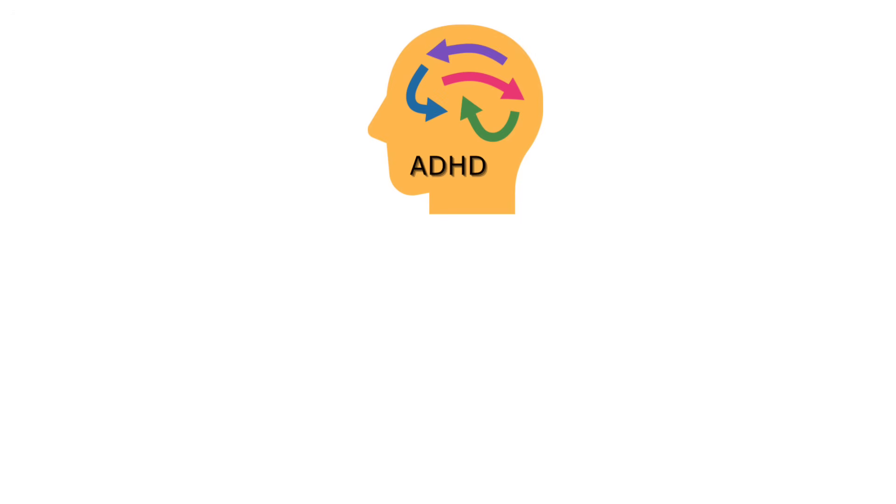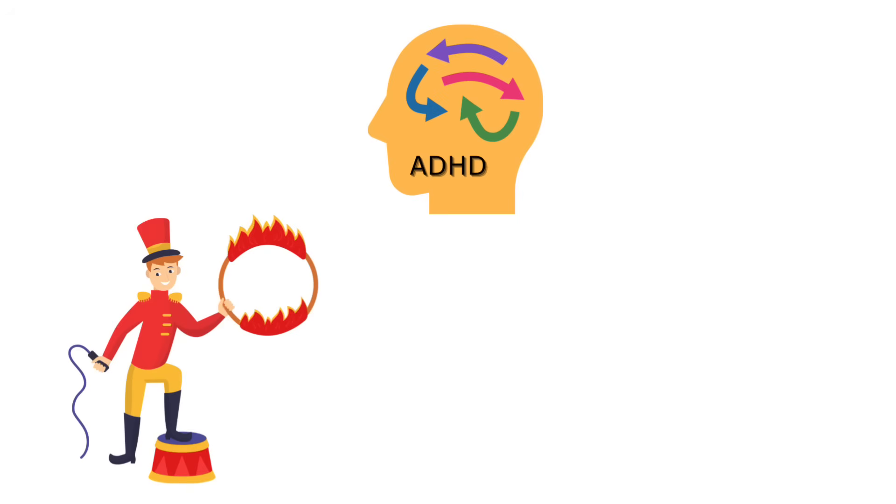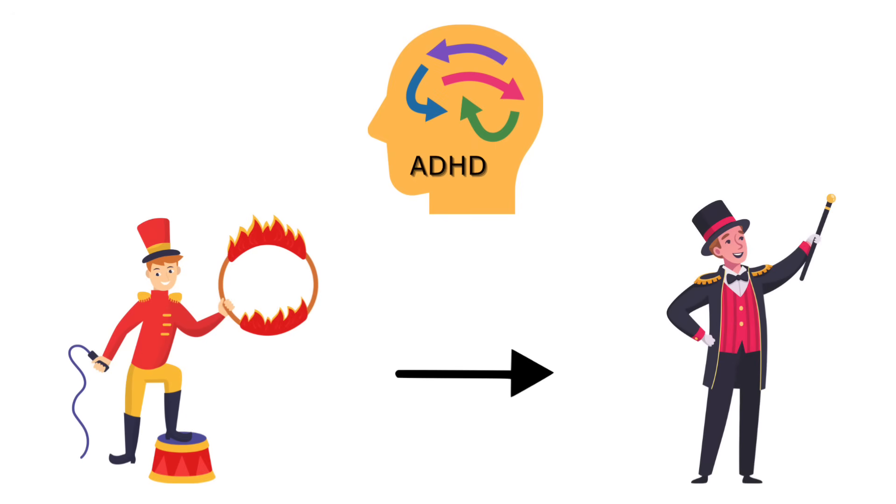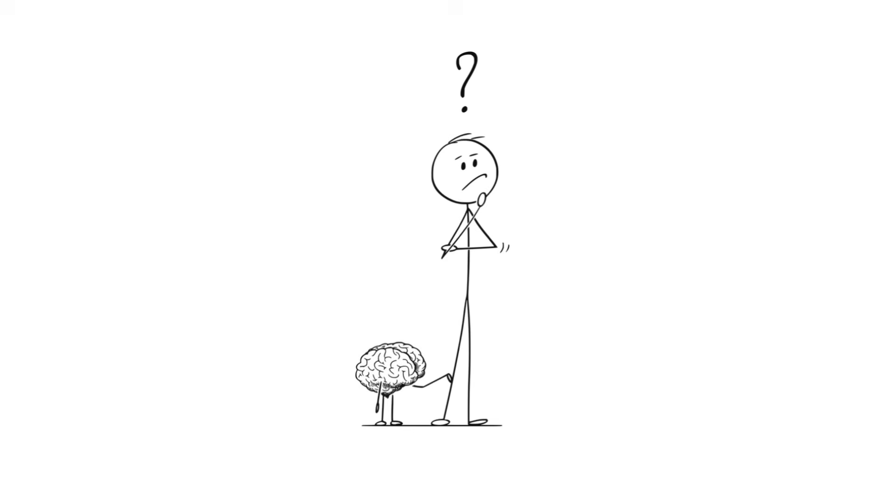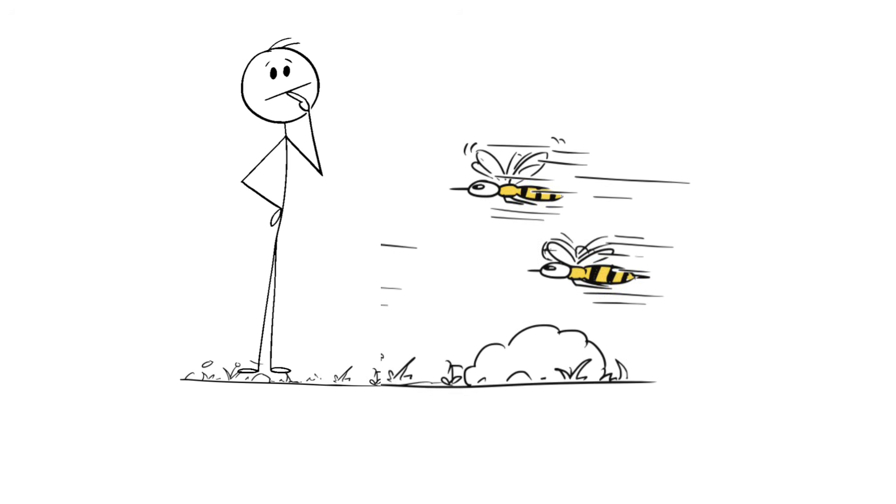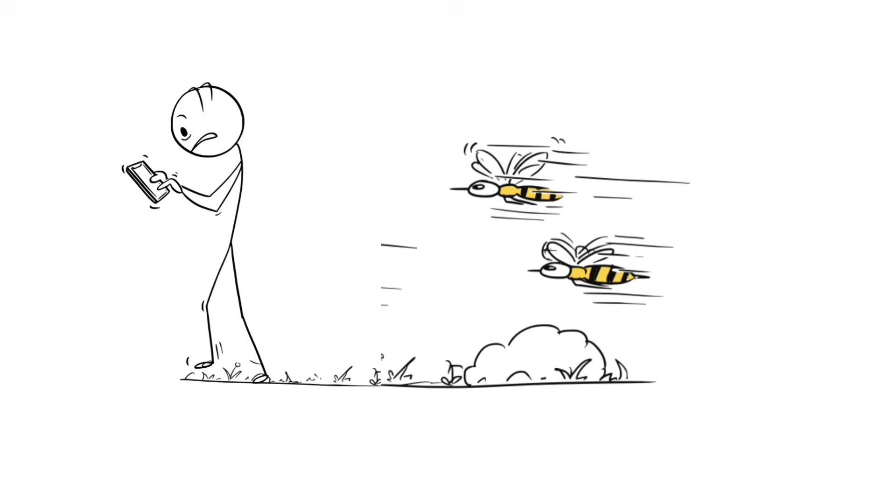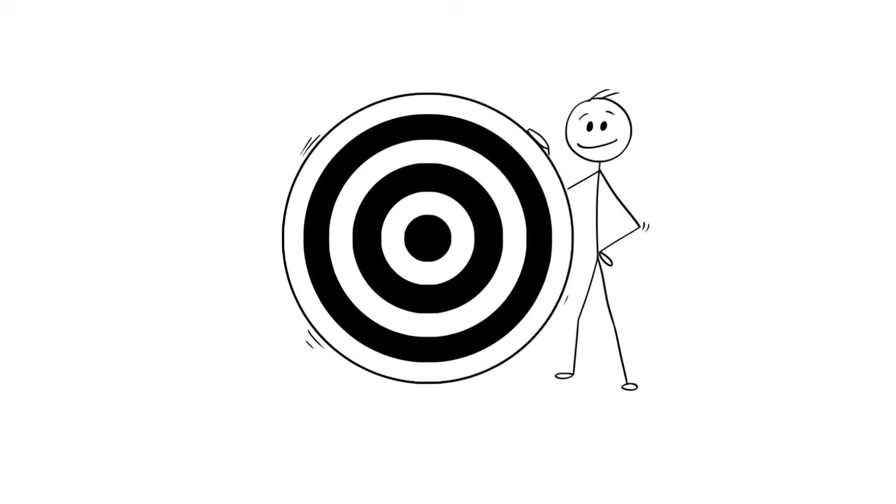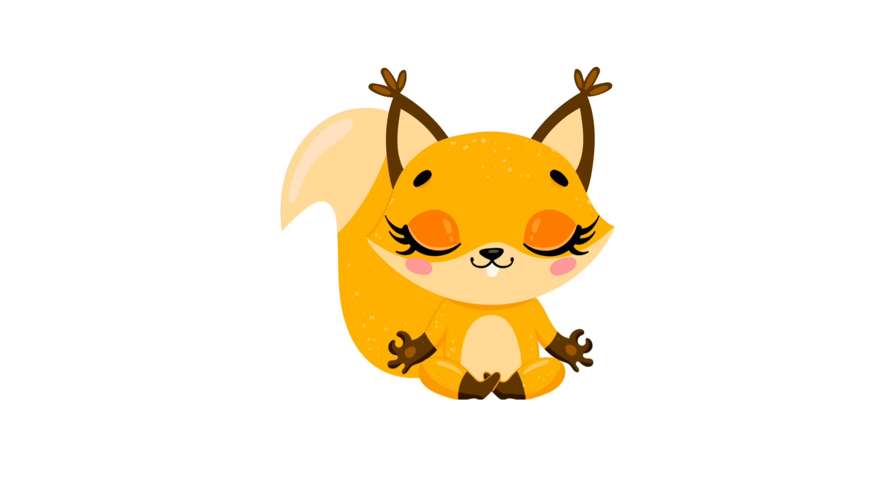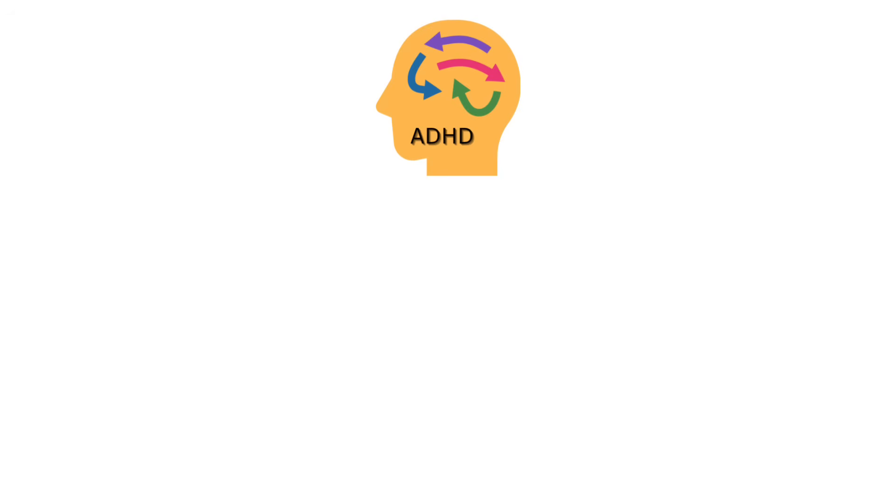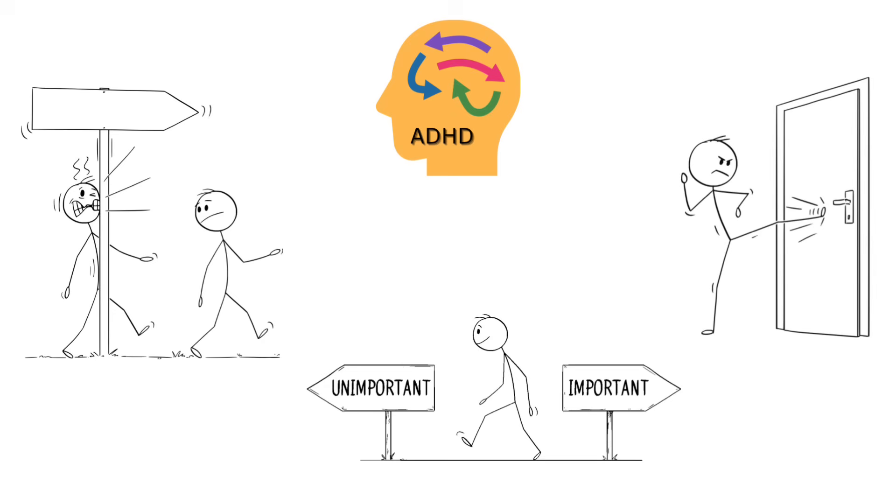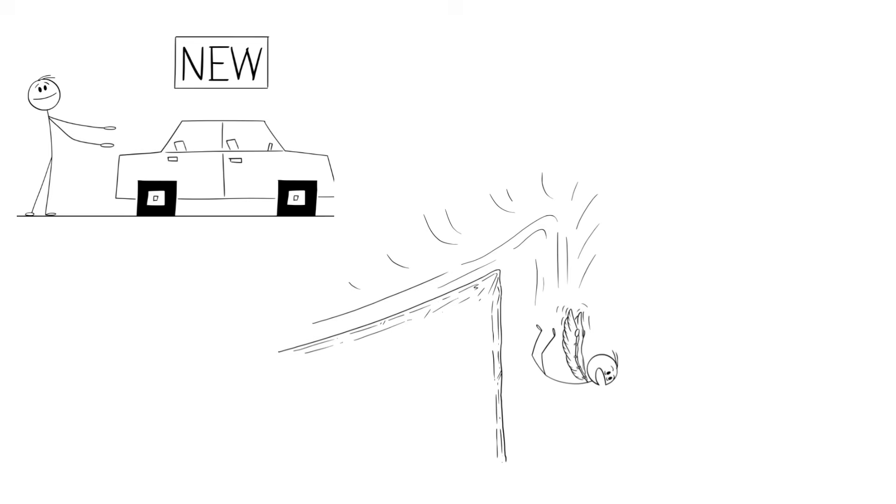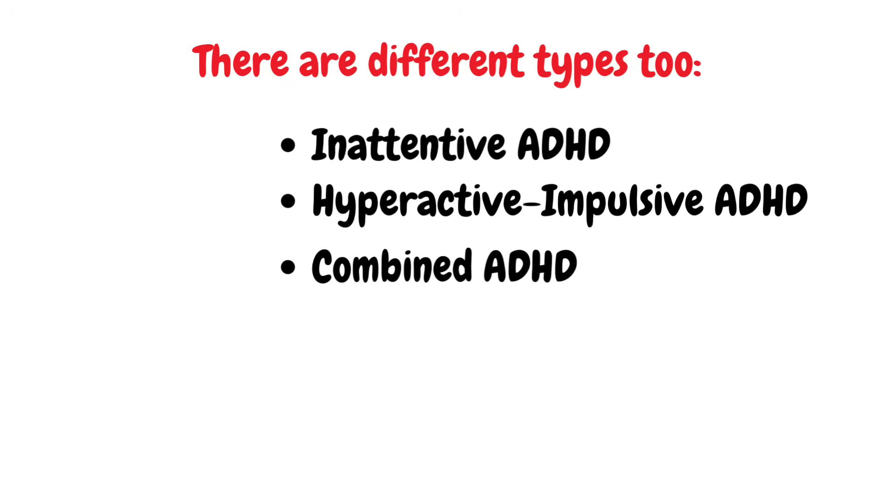With ADHD, your mind plays the role of a hyperactive ringmaster, yanking your attention from one exciting act to another before you've even had a chance to process the first one. One moment, you're deep in thought, and the next, you're wondering how bees communicate, while also reaching for a snack and checking your phone. Focusing on just one thing? That's like asking a squirrel to meditate. People with ADHD often struggle with attention, organization, and controlling impulses. Their brain is on a constant treasure hunt, chasing whatever looks new, fun, or slightly sparkly.